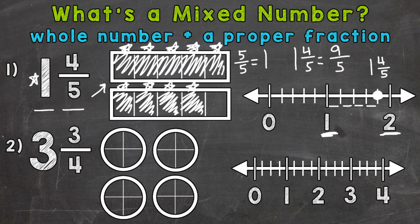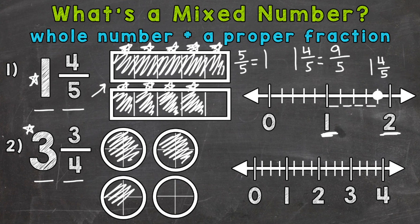Let's move on to number two, where we have three and three fourths. Again, a mixed number: we have a whole number plus a proper fraction. Let's model this first. We need to fill in three wholes, so we'll use circles this time — three whole circles to represent the whole number. Then for the proper fraction portion, we have three fourths: one fourth, two fourths, and three fourths.